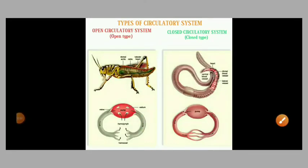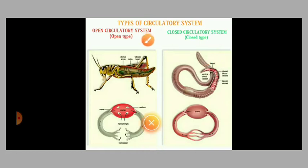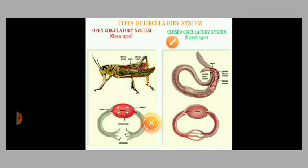Types of circulatory system. Animals possess two types of circulatory system: open circulatory system and closed circulatory system — otherwise called open type and closed type.